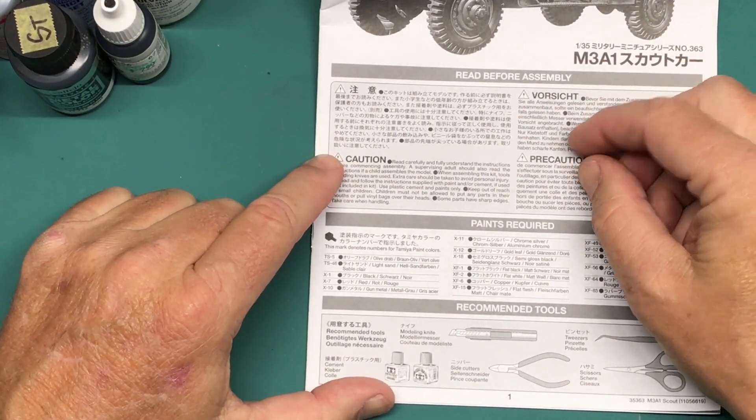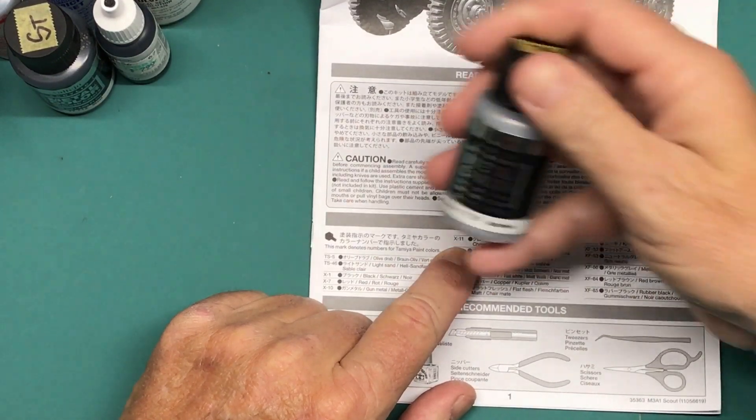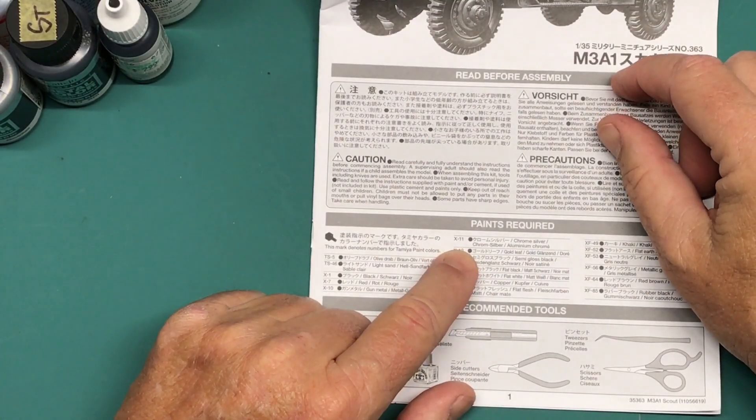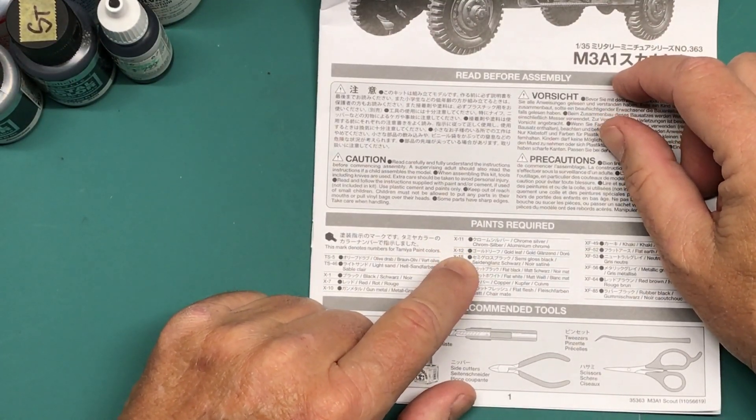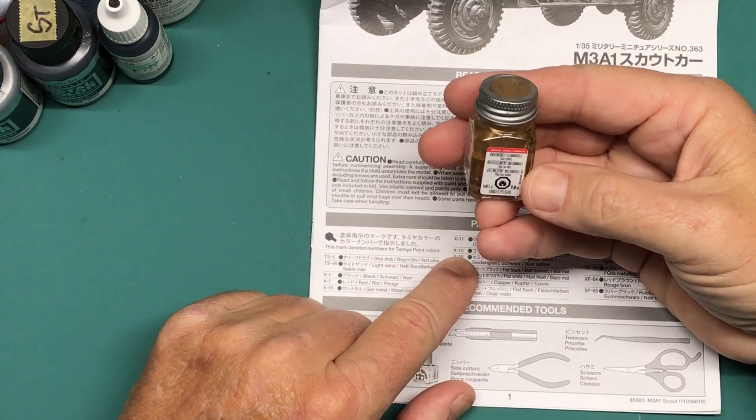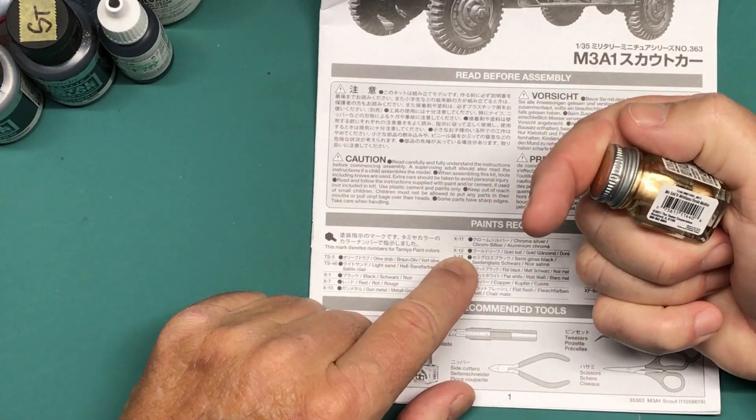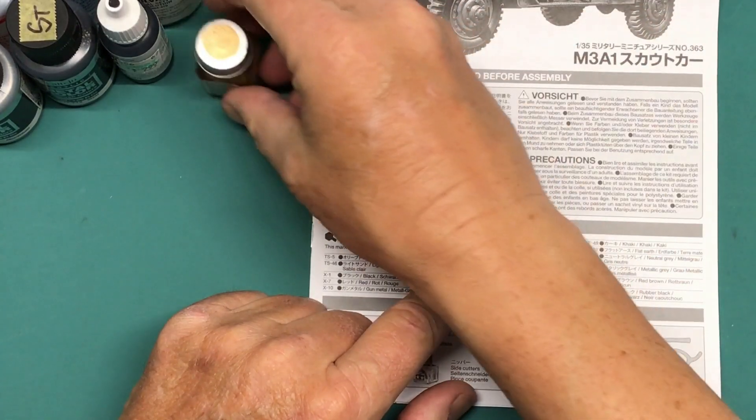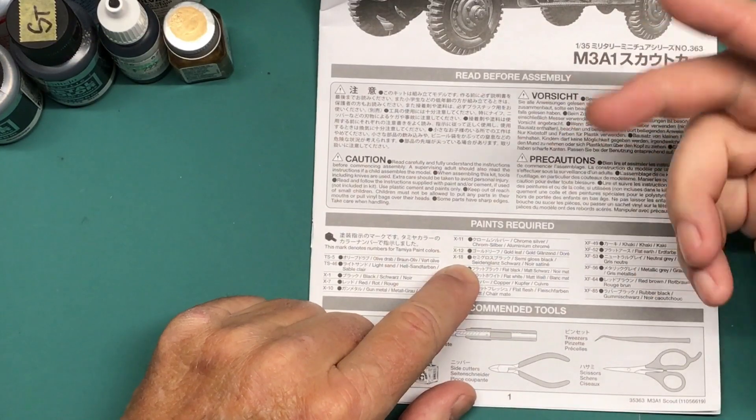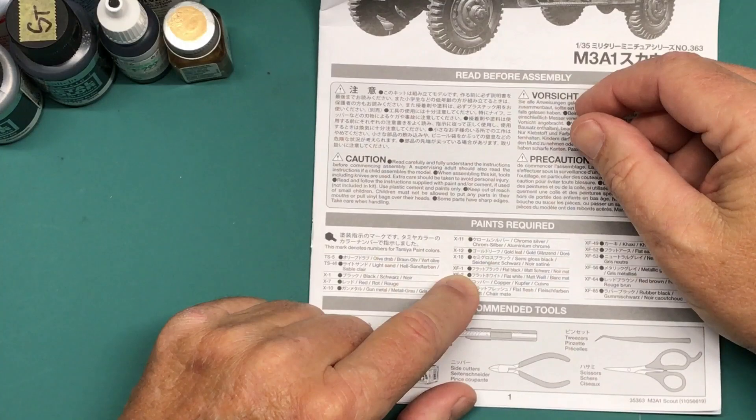Let's see. Then we have the gun metal, and then we have X11, which is chrome silver. For that I will be using Vallejo Metal Color Aluminum, which will give a good approximation to chrome silver. X12, which is gold leaf, I will not be using. I'll be using Testors enamel gold. That is going to be for the shell casings. Semi-gloss black, I'll just be using the regular black because I think those are for boots and they're going to be all weathered up anyway.